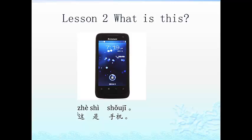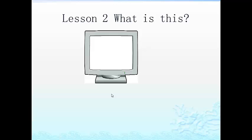这是手机. Can you guess the meaning of this sentence? Yes, you're right — this is a phone. 这 means 'this,' 是 means 'is.' 这是手机 — this is a phone.